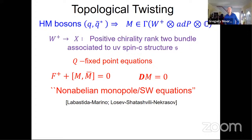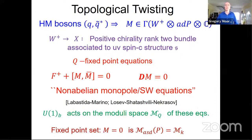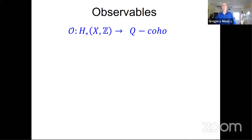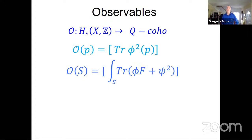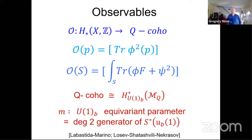The Q fixed-point equations are what are called the non-abelian monopole equations or the non-abelian Seiberg-Witten equations: a version of the instanton equation F+ + M M-bar = 0, and the Dirac equation boldface D acting on M equals zero. The U(1)_B symmetry scales the monopole field by a phase, so it acts on the moduli space. The Q fixed-point set sets the monopole fields to zero — that's the moduli space of self-dual instantons. The mass parameter is a U(1) equivariant parameter for equivariant cohomology of this moduli space.